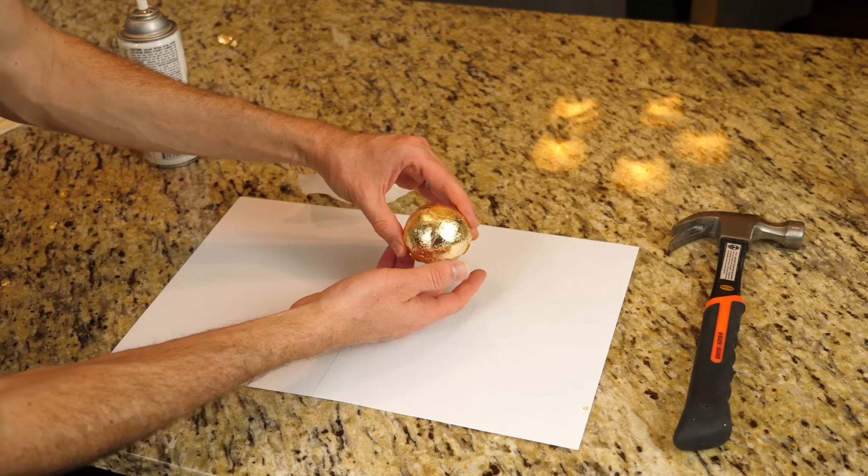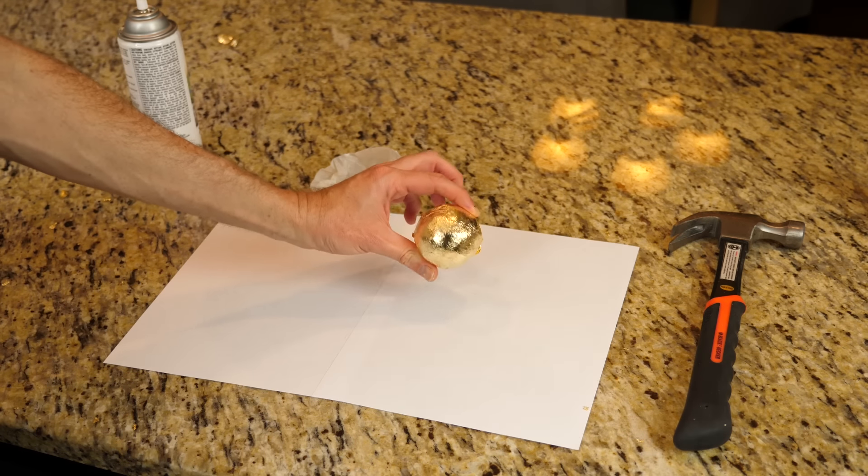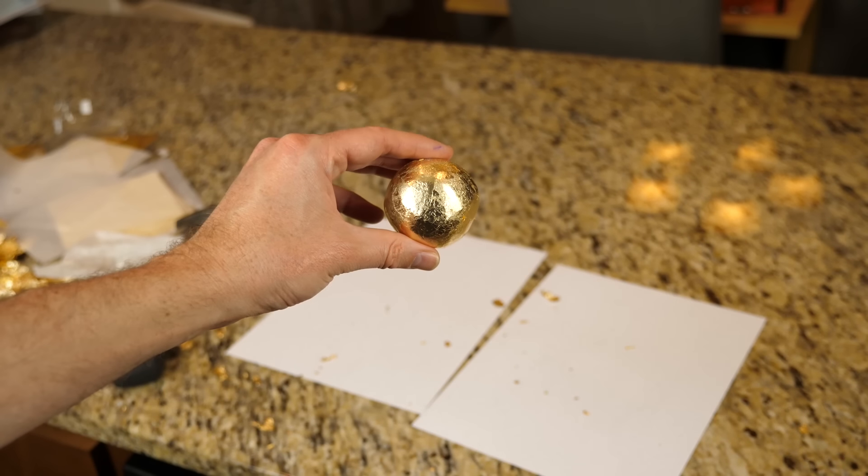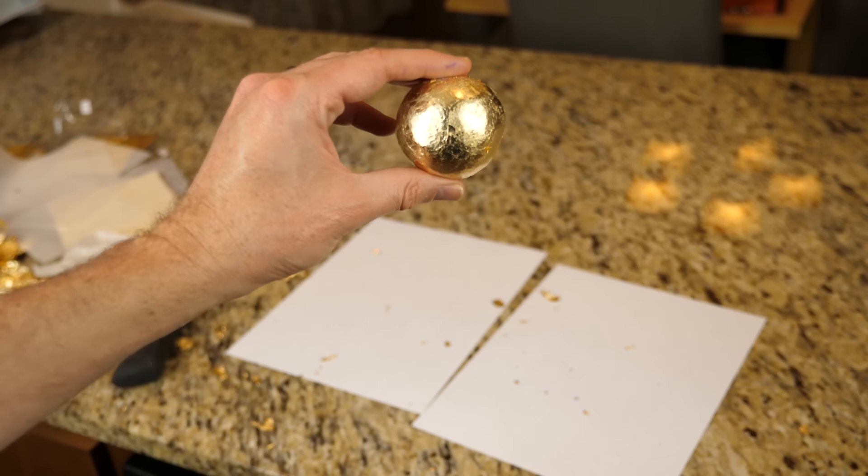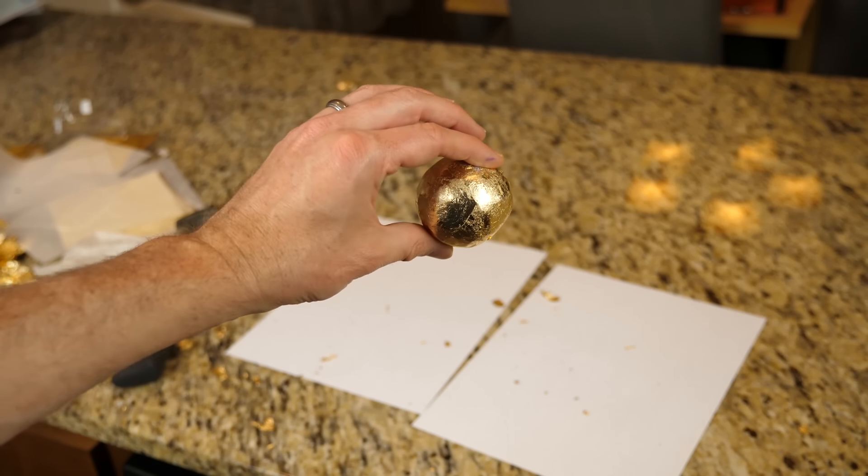Oh, look at that. Look how shiny that is. Look how awesome this is. Now, this is a mirror polished Japanese gold foil ball. This is awesome.